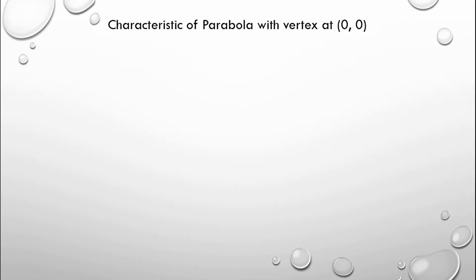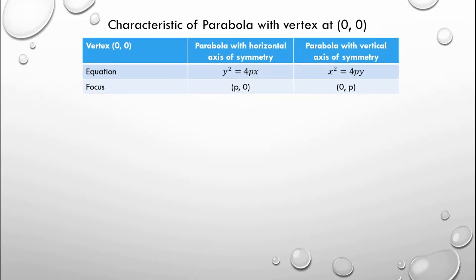These are the characteristics of a parabola with vertex at the origin. We only need the focus and equation here. A parabola with horizontal axis of symmetry has the equation y squared is equal to 4px, and a parabola with vertical axis of symmetry has the equation x squared is equal to 4py. For the focus, the ordered pairs are p, 0 and 0, p respectively.